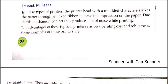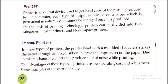Basically, printers are output devices which are used to produce a picture on the paper — on the hard copy. A printer is an output device used to get a hard copy of the result produced by the computer. Such output is printed on paper, which is permanent in nature — that means it cannot be erased. Once it is printed on the paper, it will not be changeable.